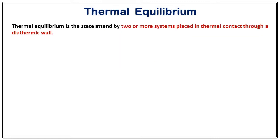The third is thermal equilibrium. Thermal equilibrium is the state attained by two or more systems placed in thermal contact through a diathermic wall. A diathermic wall is a type of boundary that allows the exchange of heat. If two systems are in contact via this diathermic wall and left in thermal contact for a long enough time, they will exchange heat and finally reach thermal equilibrium.